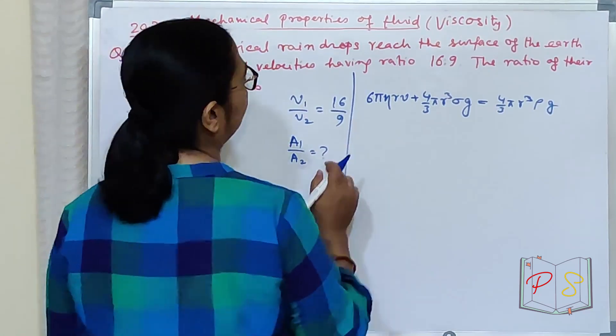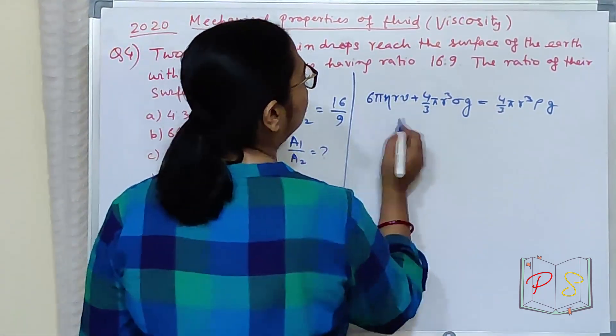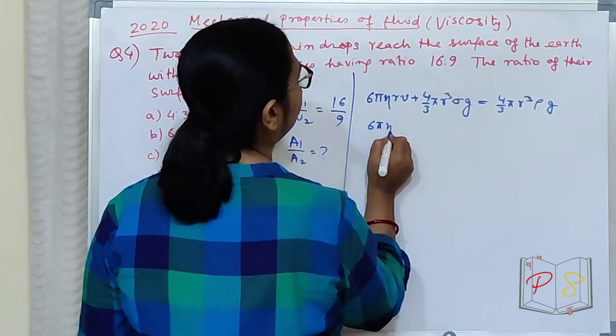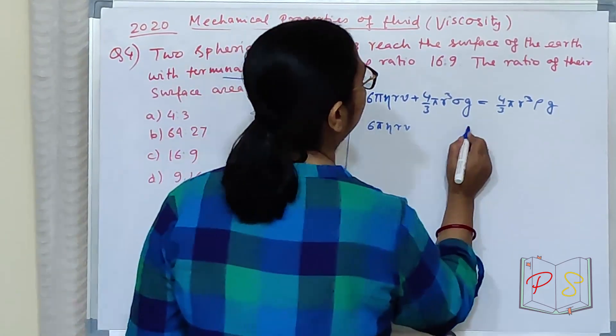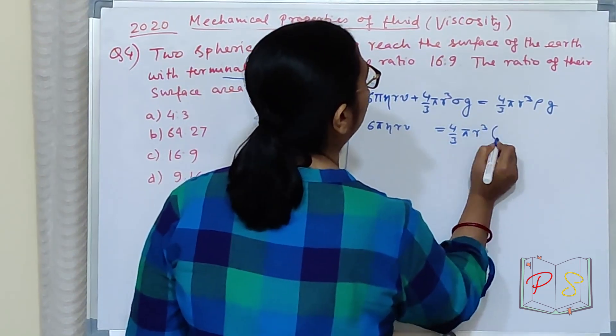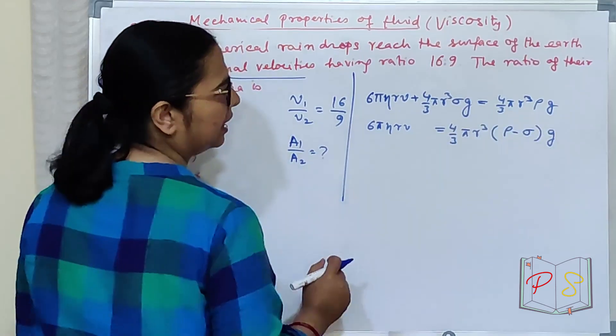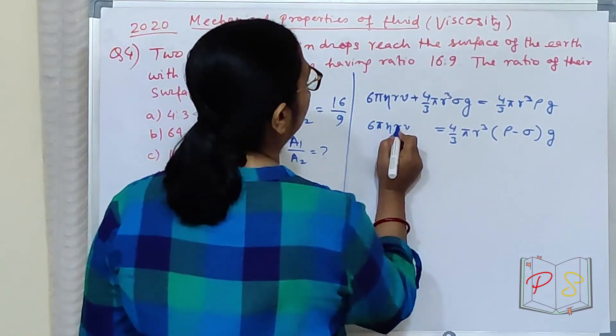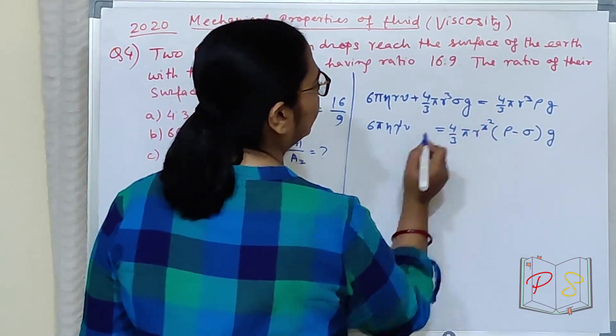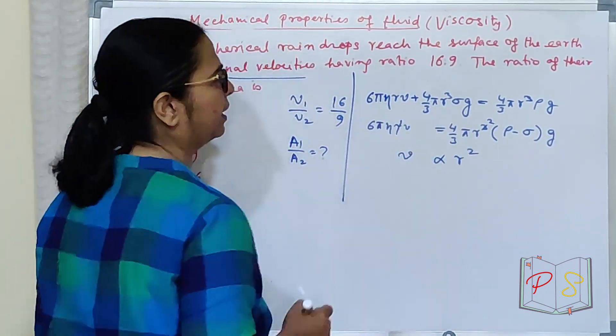Clear? Mujhye v se relation ni kalna hai. V ka ratio dehiya. Terminal velocity ka ratio dehiya. Tho 6 pi eta r v equal to 4 third pi r cube rho minus sigma into g. V ee bala udhar chala ghiya. Thik hai? This r ee kat ghiya, r ho ghiya. Tho v is proportional to r square.